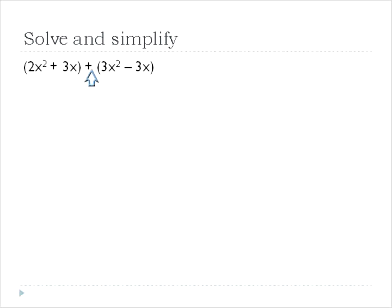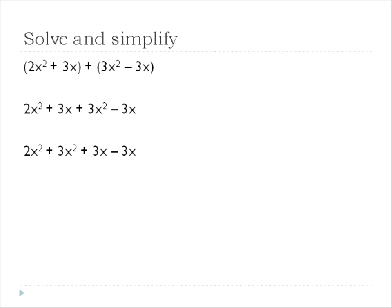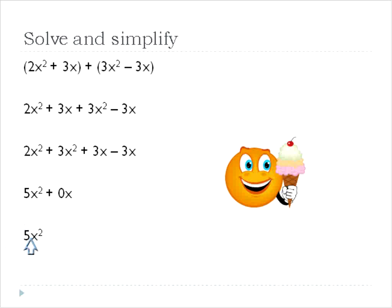So in this case we're adding the other bag, so we'll distribute that plus to each term in the parentheses: plus three x squared and plus negative three x, in other words minus three x. I'm going to move around my terms so that they line up with each other, and you'll end up with two x squared plus three x squared, and positive three x minus three x. Joining together terms that are exactly the same, we'll end up with five x squared and zero x's, because you have three minus three. So our final answer will just be five x squared.